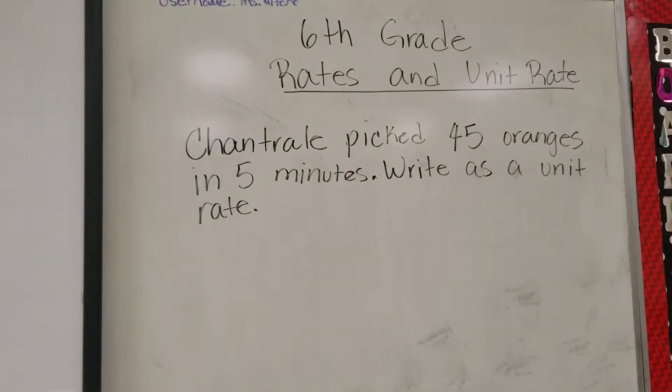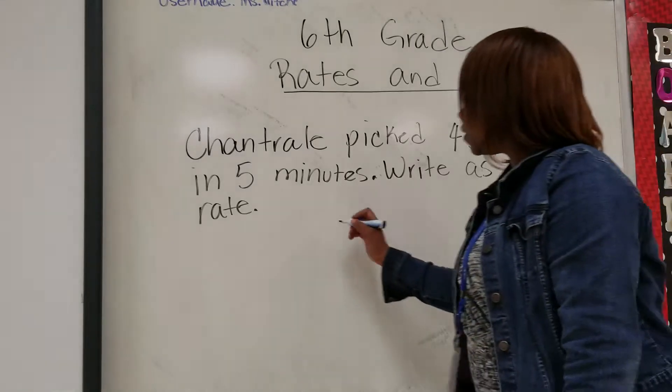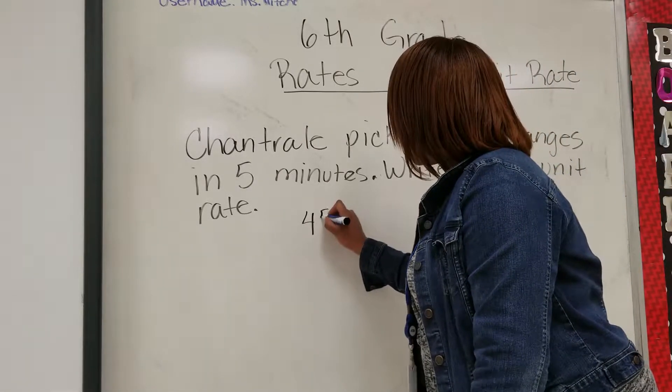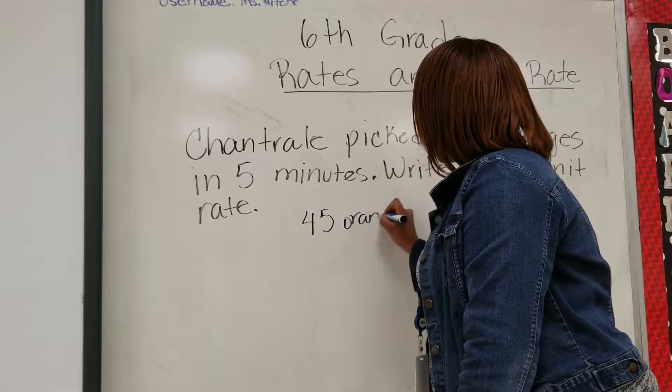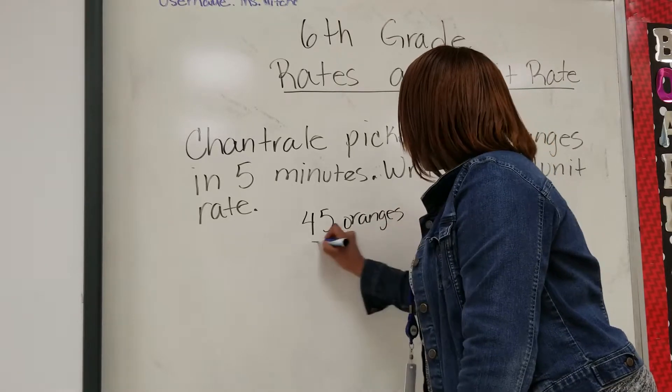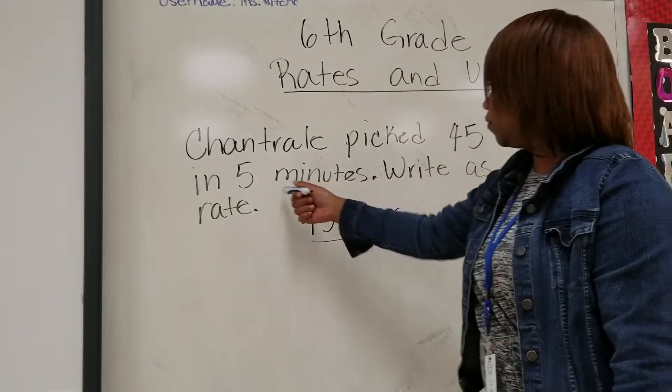Chanterelle picked 45 oranges in five minutes. Write as a unit rate. So the first thing that we need to do is write it as a rate, which is 45 oranges, and she picked them in five minutes.